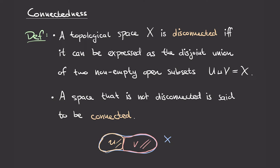This way of defining connectedness has the consequence that it will be much easier to prove that a space is disconnected than to prove it is connected. To prove disconnectedness, we just need to exhibit two disjoint non-empty open subsets U and V whose union is X — it's an existence property. On the other hand, to show a space is connected, we need to prove it's impossible to find two such subsets. Hidden in the definition of connectedness is a universal quantifier, which makes proving connectedness more difficult than proving disconnectedness.